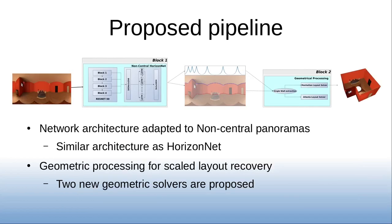We propose a new pipeline that combines deep learning and geometric reasoning. We propose a network architecture similar to HorizonNet. Due to the recurrent block, the network learns to extract boundaries of the structural lines column by column, which fits perfectly and is very suitable to extract the structural lines from non-central panoramas. The network imposes some restrictions, such as horizontally-oriented panoramas. We turn this restriction into an advantage, using this information as prior in our geometric processing. Then, from the output of the network, we propose a geometrical processing that exploits the properties of non-central panoramas to compute the scalar 3D lines.